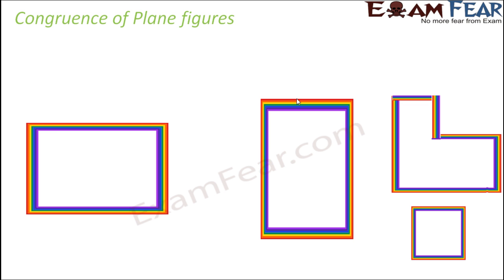So what do you see on the screen? On the screen you do see a lot of different shapes. We have a plain figure and we have to find out if these figures — let's call this 1, this is 2, and this is 3 — which of these are congruent to this plain figure and which are not. While seeing this we will also come across certain do's and don'ts to find out congruence between two figures.